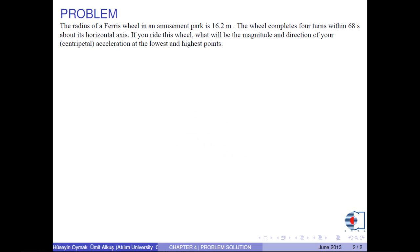The radius of a Ferris wheel in an amusement park is 16.2 meters. The wheel completes 4 turns within 68 seconds about its horizontal axis. If you ride this wheel, what will be the magnitude and direction of your centripetal acceleration at the lowest and highest points?